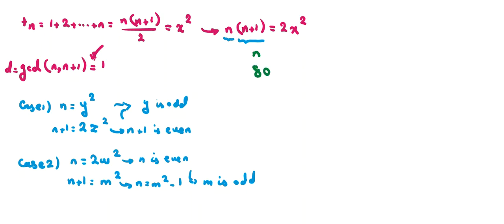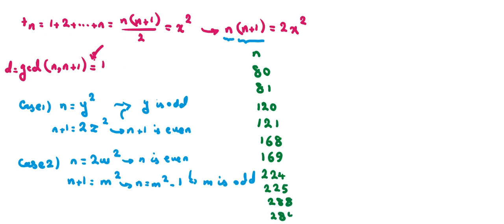The candidate values to check are: n = 80 (9²−1), n = 81 (9²), n = 120 (11²−1), n = 121 (11²), n = 168 (13²−1), n = 169 (13²), n = 224 (15²−1), n = 225 (15²), n = 288 (17²−1), n = 289 (17²).